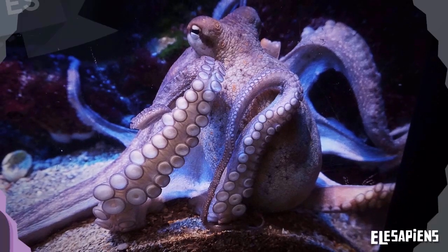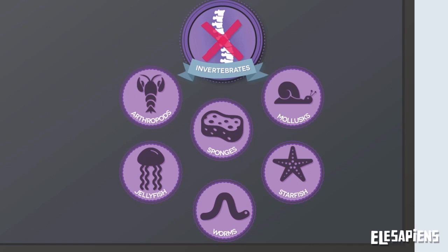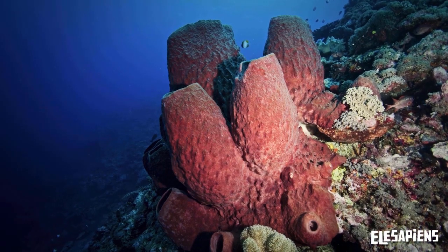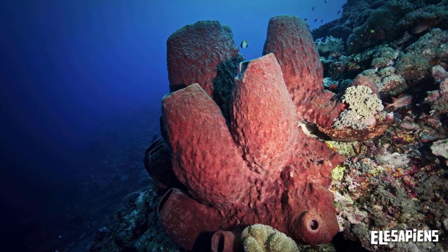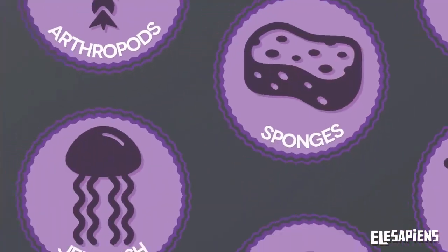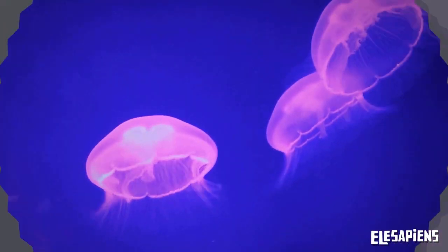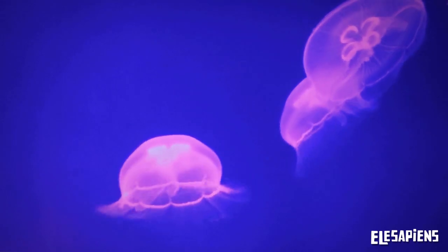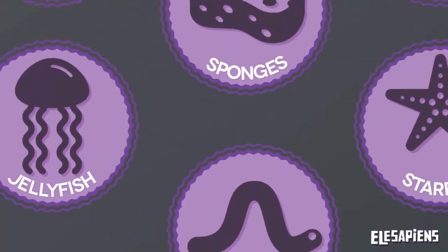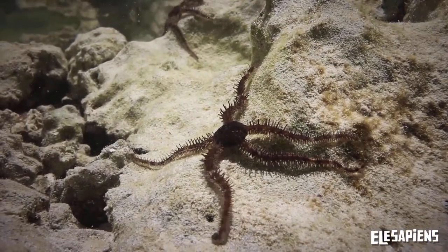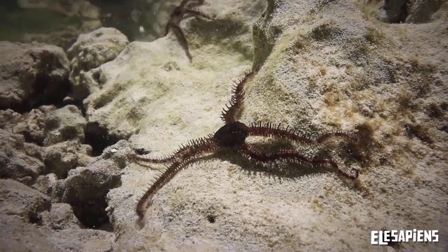Of the invertebrates that only live under the sea, the following stand out: sponges, that have a sack-shaped body and are not mobile; jellyfish, that have tentacles and move around freely; and starfish, that drag their odd body along the sea floor.